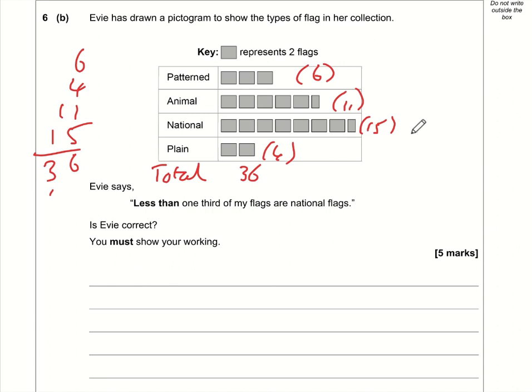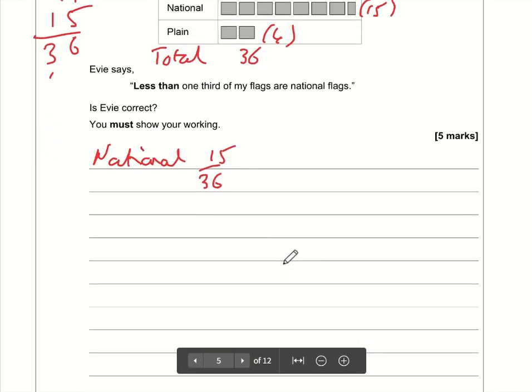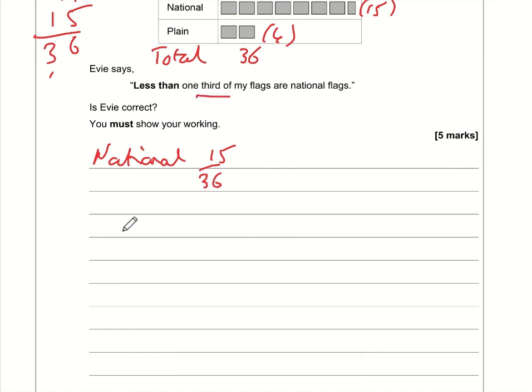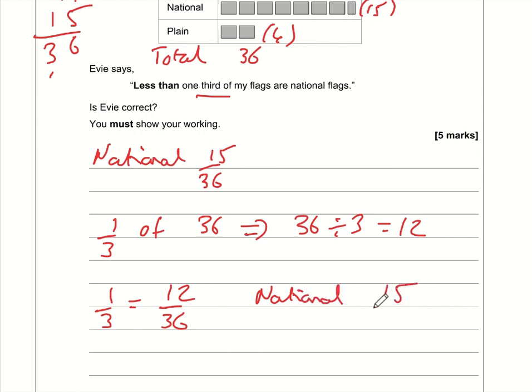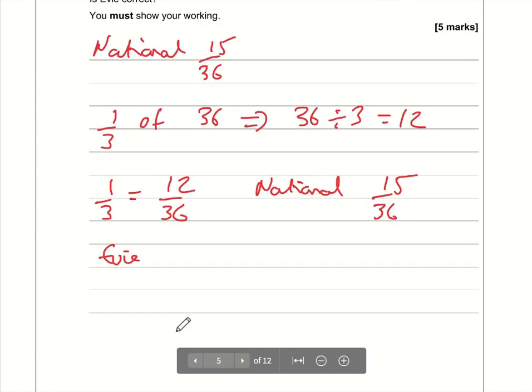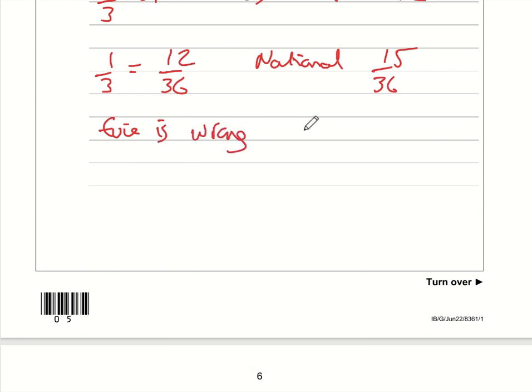So how many are national flags? Well national flags, that is 15 out of 36. Now we want to work out what one-third of the total is. One-third of 36 is 12 out of 36. And we know that national is 15 out of 36. The question says, or Evie says rather, less than one-third of my flags are national flags. Well Evie is wrong because 15 out of 36 is more than 12 out of 36, which is the equivalent of one-third.